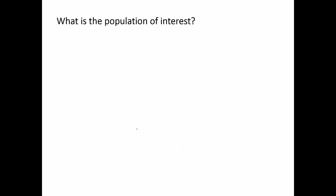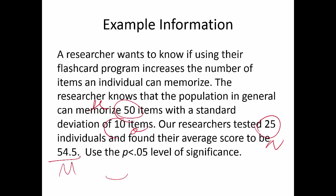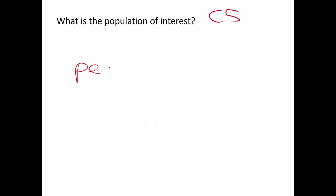The first question is from chapter five: what's the population of interest? Looking at this problem, we're interested in students or people in general because we want to know if we can help individuals learn better. So the answer is all people, because we're trying to make it easier for people to memorize information.